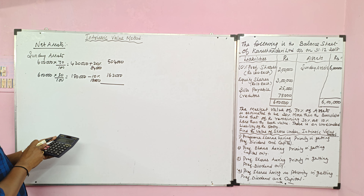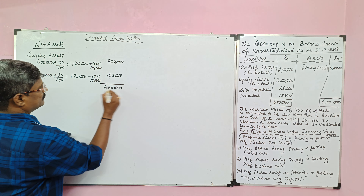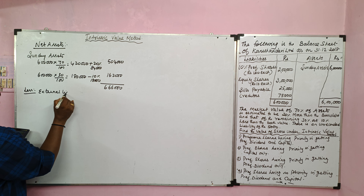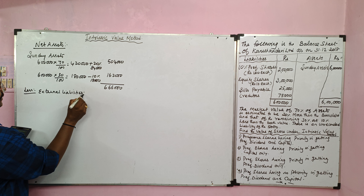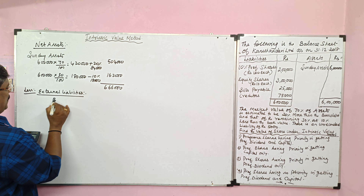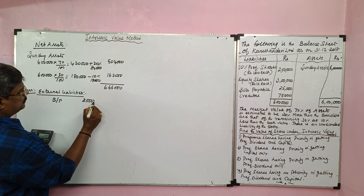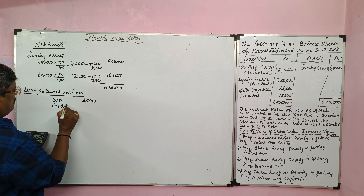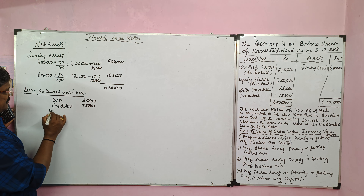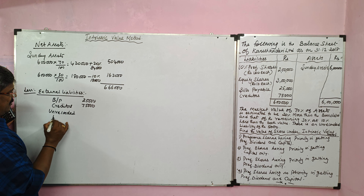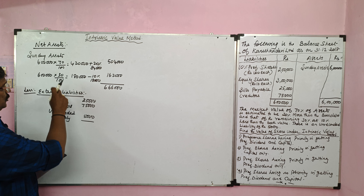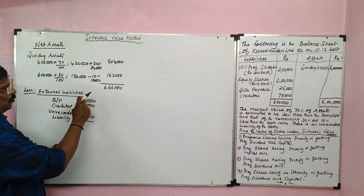The total realizable value of assets is 6,66,000. We have to deduct external liabilities. From the balance sheet, we take bills payable 25,000 and creditors 75,000. From the adjustments, there is an unrecorded liability of 5,000. So the total external liabilities amount to 1,05,000.